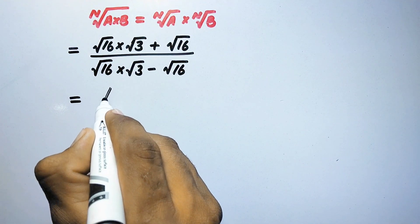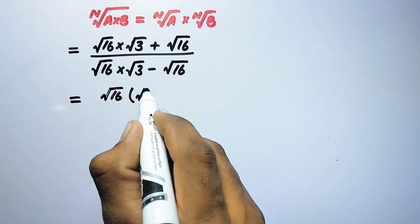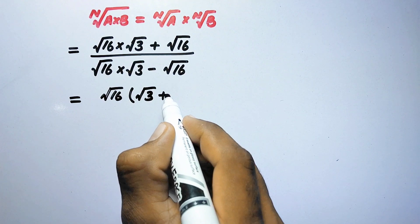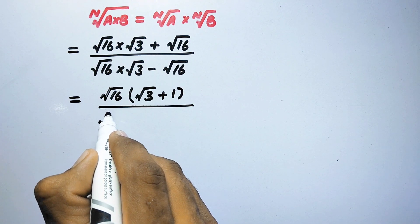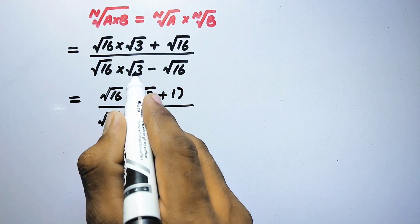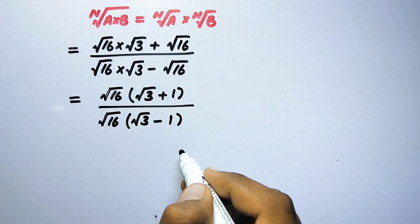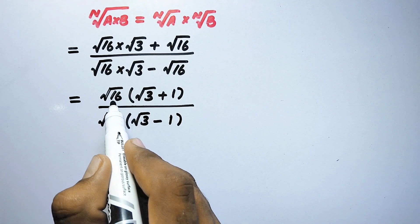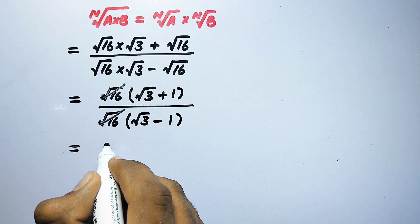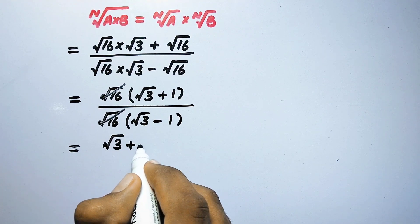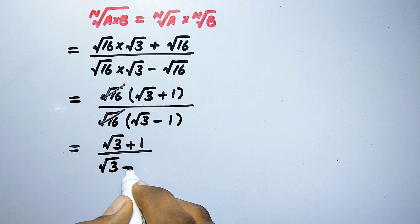We will take square root of 16 out as a common factor from both numerator and denominator. After factoring, the numerator becomes square root of 16 times (square root of 3 plus 1), and the denominator becomes square root of 16 times (square root of 3 minus 1). The square root of 16 cancels, leaving square root of 3 plus 1 divided by square root of 3 minus 1.